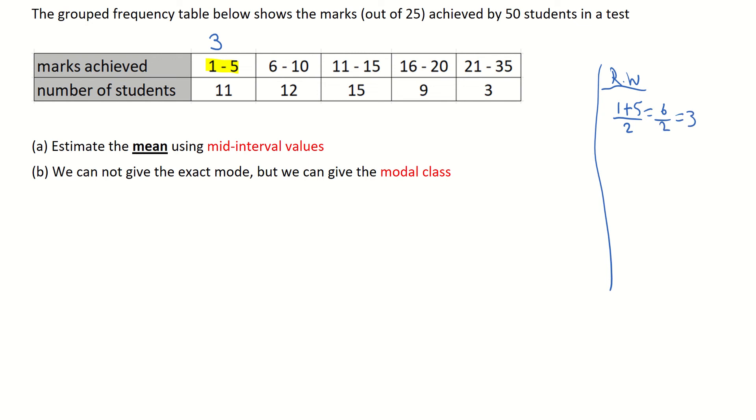I then come to the mid-interval value of 6 and 10. The middle of 6 and 10 is 8. To get it, add 6 and 10, divide by 2. You get 16 over 2 and I get a mid-interval value of 8. The mid-interval value then of 11 and 15. So once again I add 11 and 15, get the average, divide by 2. So that's 26 over 2 which is 13.